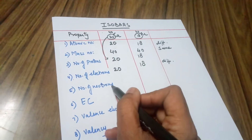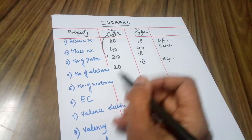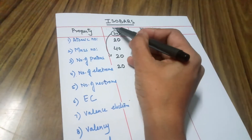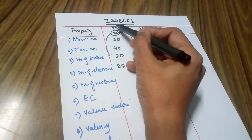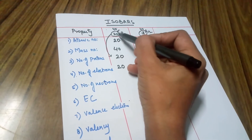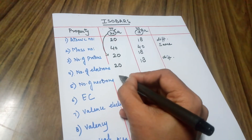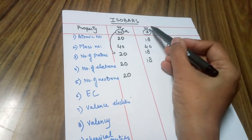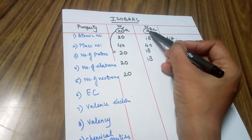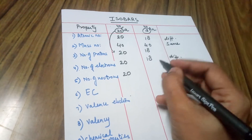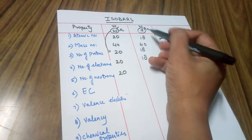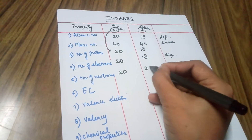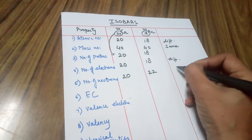Coming to the number of neutrons. How do you calculate the number of neutrons? Neutrons are calculated by mass number minus the atomic number. For calcium: 40 minus 20 gives 20 neutrons. For argon: mass number is 40, atomic number is 18, so the number of neutrons is 22. Again they differ.